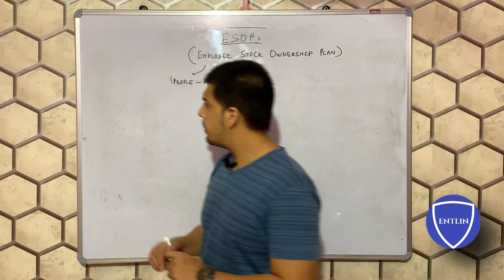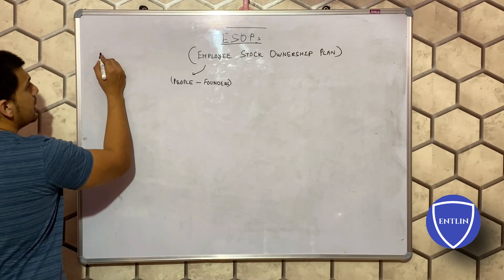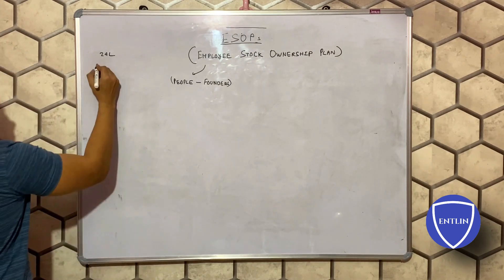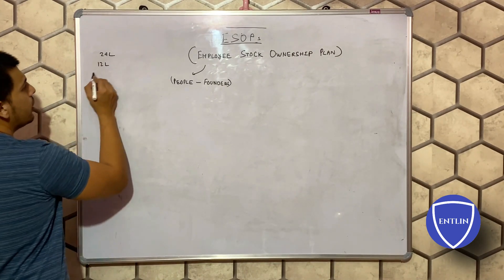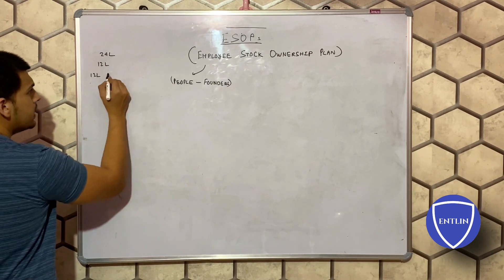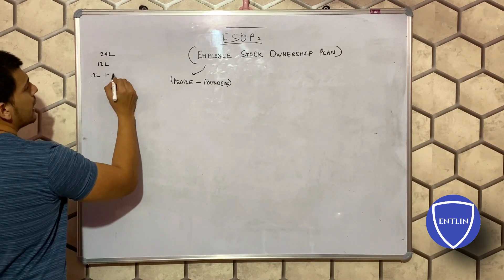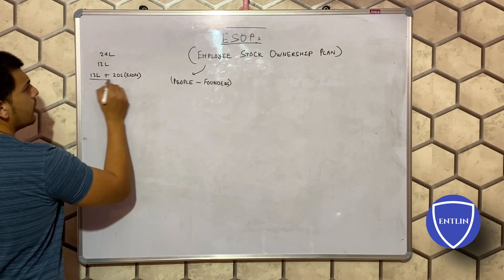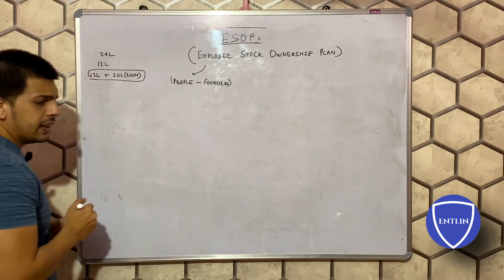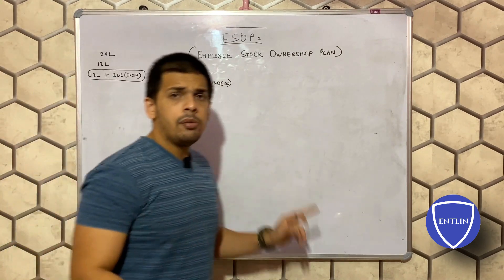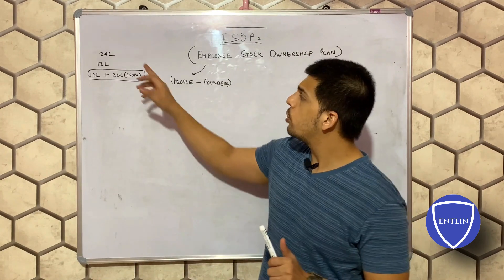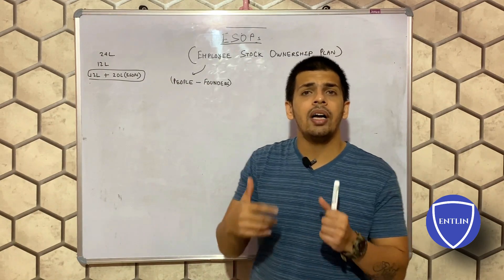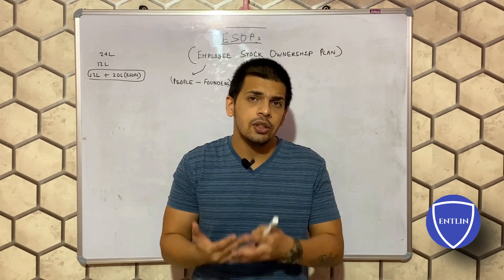For example, if someone's market package is 24 lakhs yearly but you can only give 12 lakhs, you can give 12 lakhs cash plus 20 lakhs worth of ESOPs. This helps your company save cash, because cash is very important in a startup. It also helps you hire talented people even when you do not have enough cash.